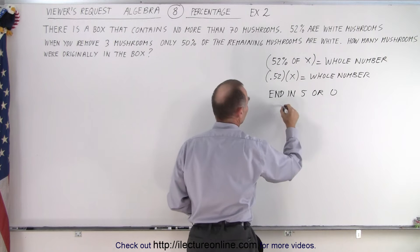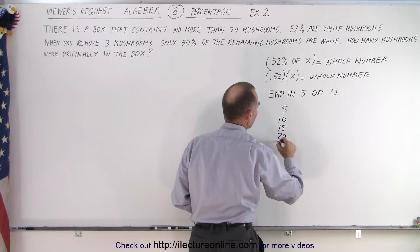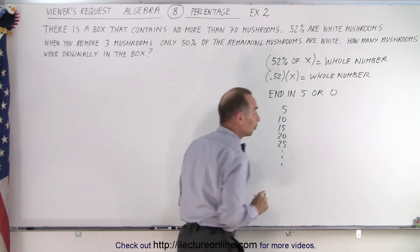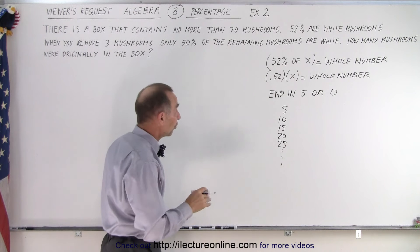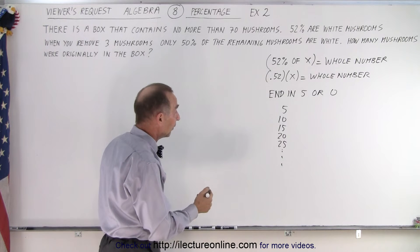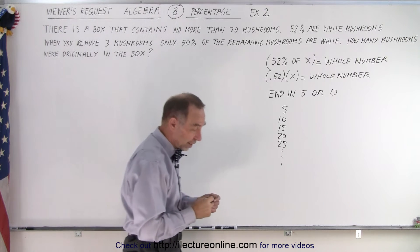So in other words it could be 5, 10, 15, 20, 25 and so forth. So what's the smallest of those numbers so when you multiply times 52% you get a whole number? Well let's try it.